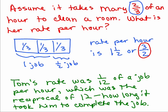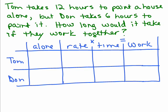So let's go on to an actual work problem. Tom takes 12 hours to paint a house alone, but Don takes 6 hours to paint it. So Don's faster, isn't he? How long would it take if they work together? So we know that alone, it takes Tom 12 hours and does it tell us how long Don takes alone? Yes, he takes 6 hours. So their rates are the reciprocals, 1/12 and 1/6.